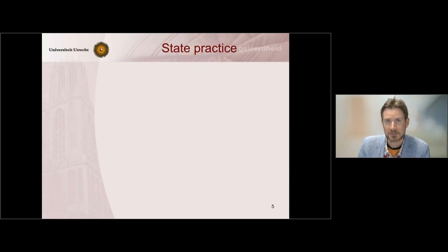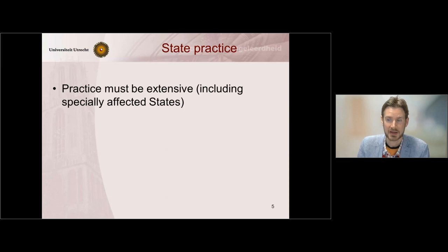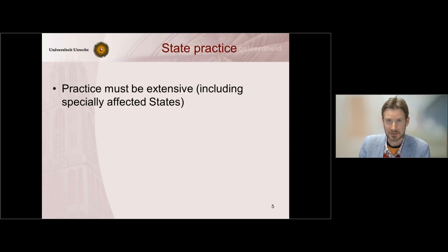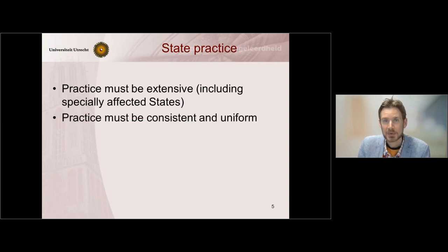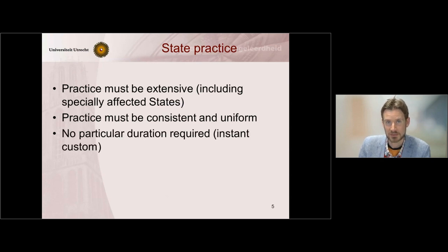Beginning with state practice: state practice has to be extensive, meaning it must include many states, especially those particularly affected by the rule. So if there is a custom on the use of a particular natural resource, then we are interested in the practice of the states that actually have those natural resources. The practice must be consistent and uniform — consistent and uniform whenever the circumstances present themselves. No particular duration is required, so we don't need to wait for the lapse of a certain period of time before we can speak of a custom.